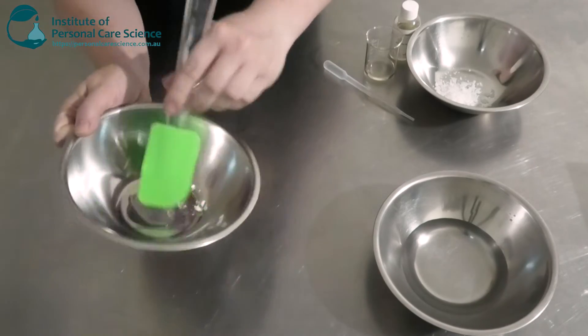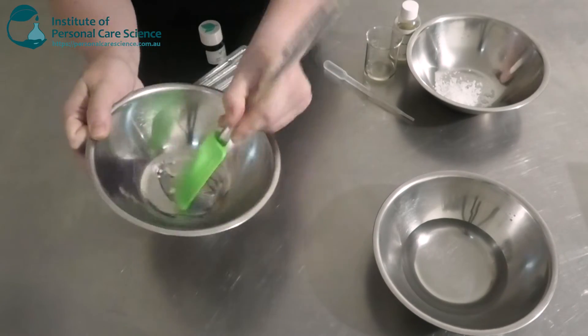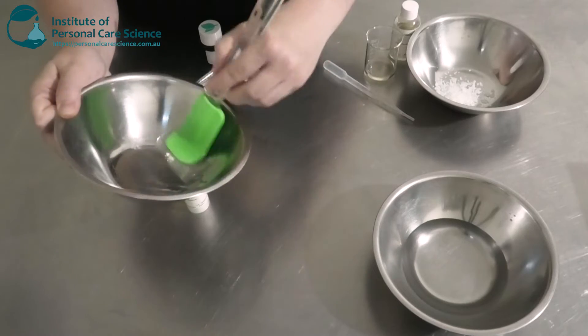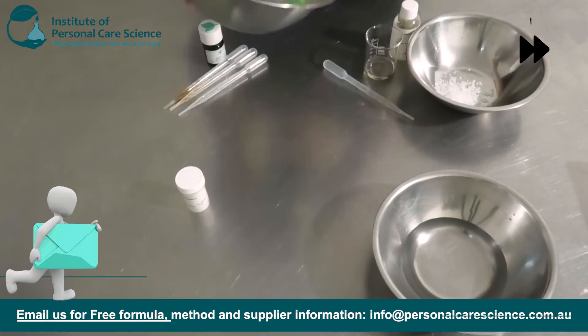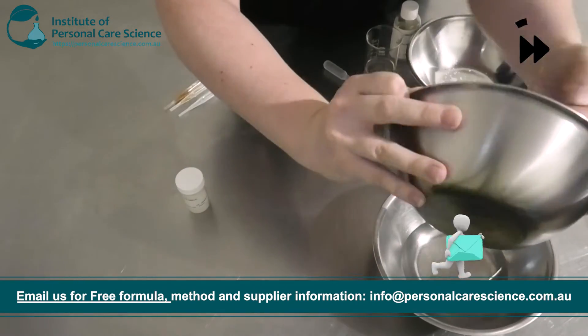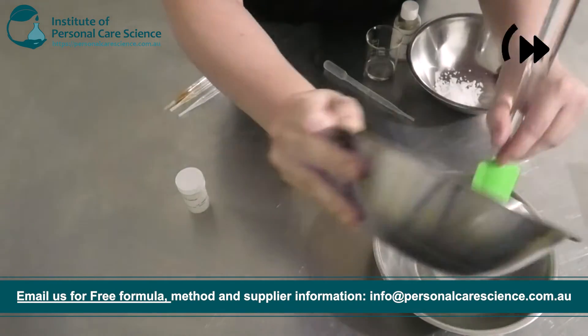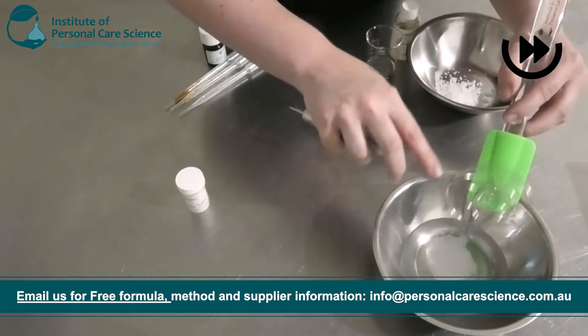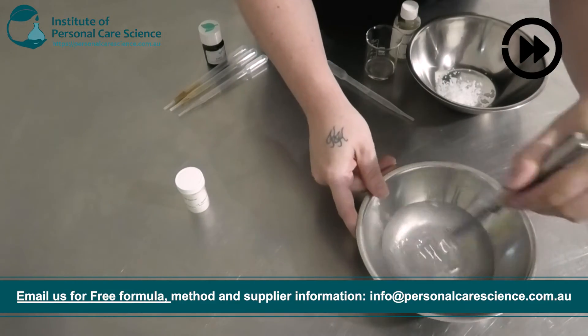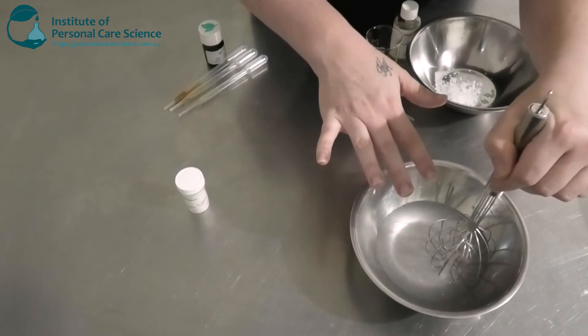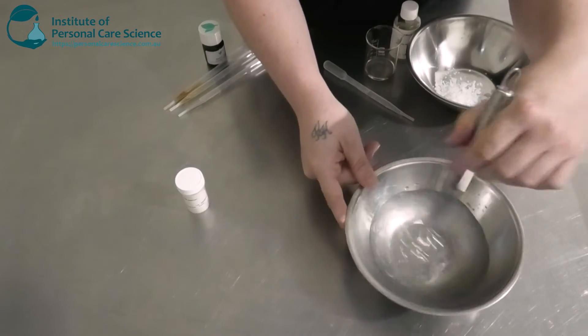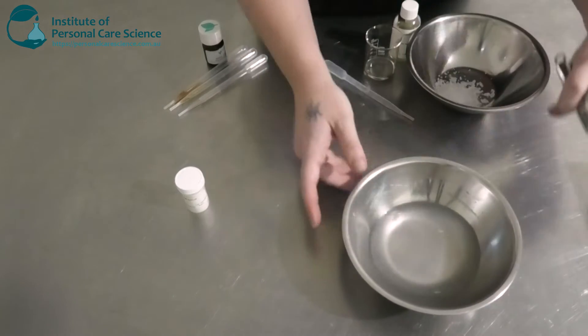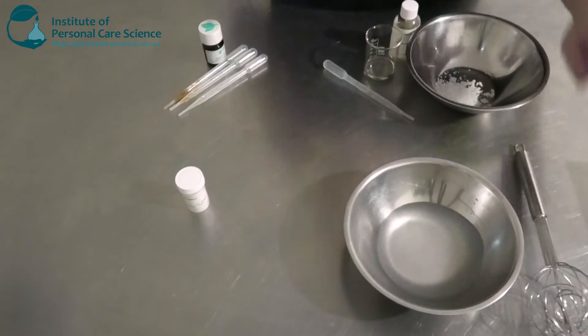So I'm going to go ahead and slurry that in my glycerin, and then I'm going to add that into my water phase. Now this won't hydrate fully straight away. It will start to thicken up a little bit when we add a bit of heat, but at the moment there's not much viscosity there, which is fine.